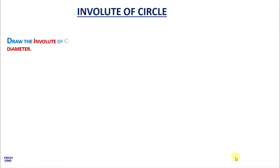Hello everyone. In this tutorial we are going to understand how to make the involute of a circle. The question is: draw the involute of a circle of 50 mm diameter. First of all, you have to draw the circle of 50 mm diameter.